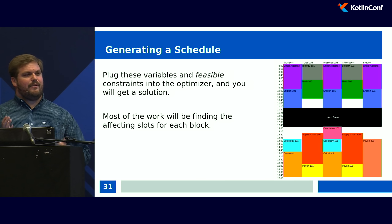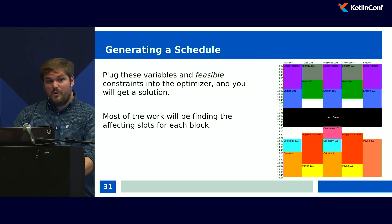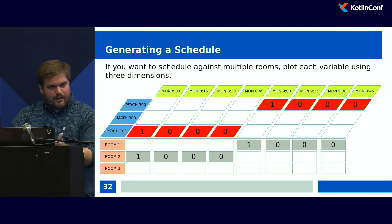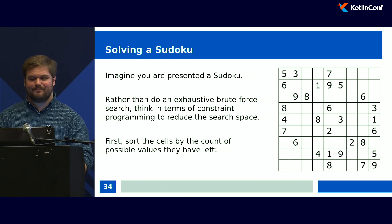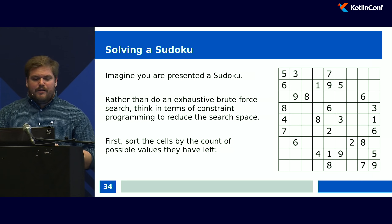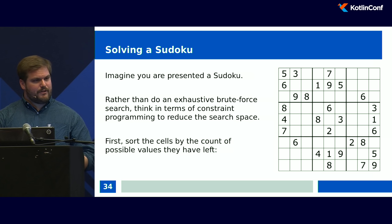One question: how are those ones or zeros actually calculated? I pass all those constraints to OJ-Algo and it solves them for me. But if you want to implement from scratch, it's not too hard if you're comfortable with recursion. Let me show a different example to explain that. Imagine you're presented a Sudoku — every row, column, and square of nine cells must have the numbers one through nine, and some numbers are pre-populated. Rather than do an exhaustive brute force search, think in terms of constraint programming to reduce the search space.